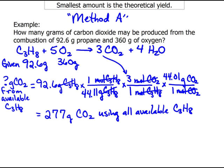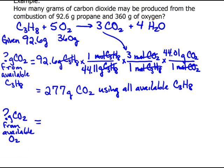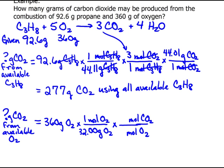Great. Now let's do it again for the other reactant. How much of the CO2 do I get from the available O2? The available is 360 grams of O2. I've got to get grams into moles. That's 32.00 grams of O2 per mole of O2. I use my mole to mole ratio, and pull the numbers from the balanced chemical equation.